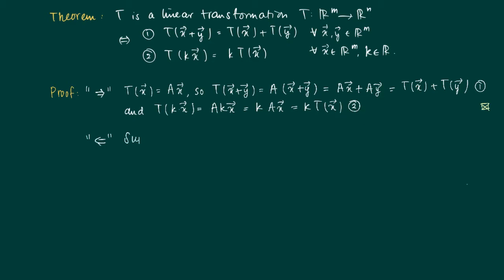So now we go back. Suppose that we have a mapping T from R^m to R^n which satisfies 1 and 2.